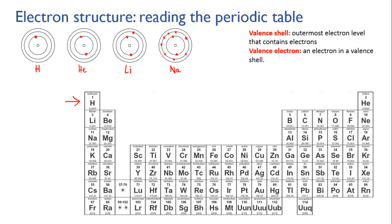And then we've still got one left over. The second electron level can hold a maximum of eight electrons, so that one left over has to go into the third electron level. So sodium is in the third period — the beginning of the third row — and it has just one valence electron in that shell.